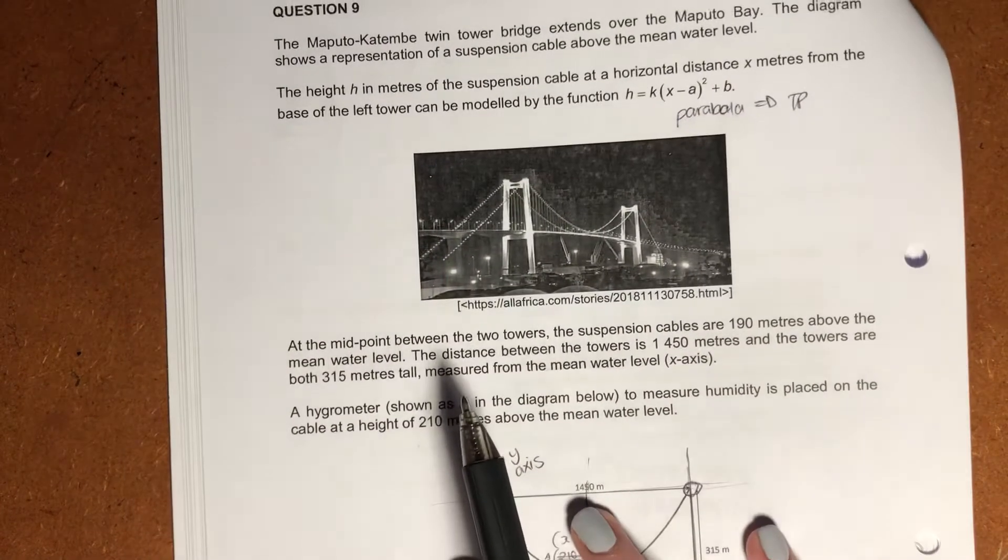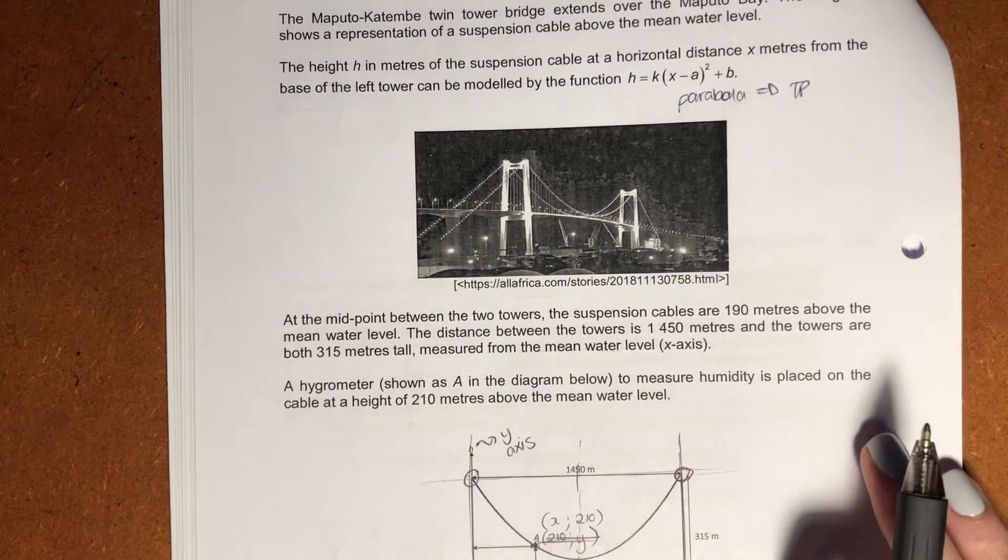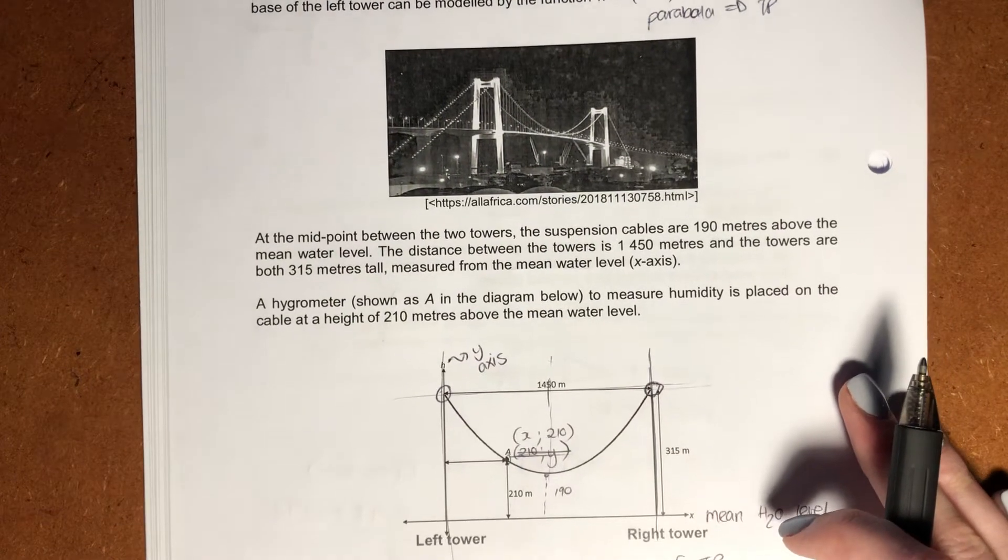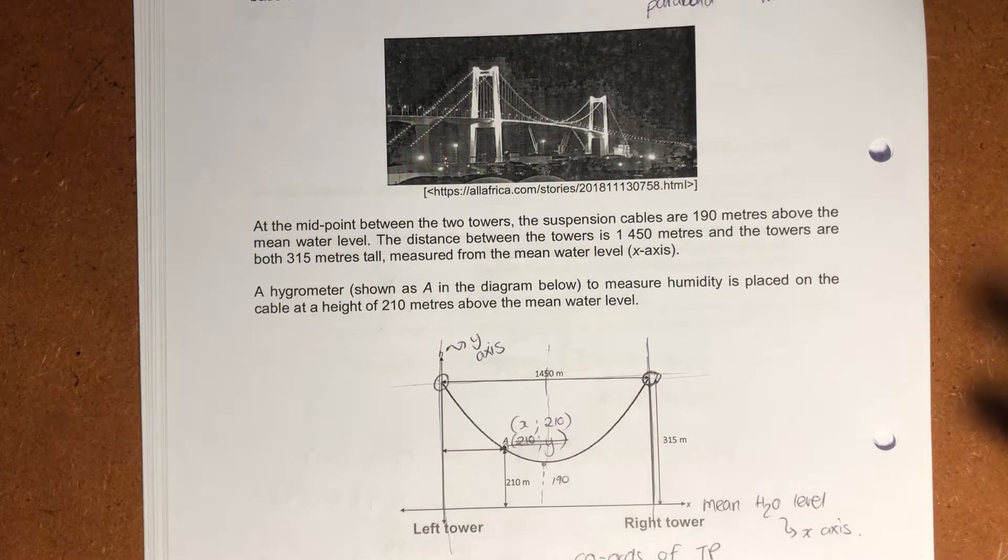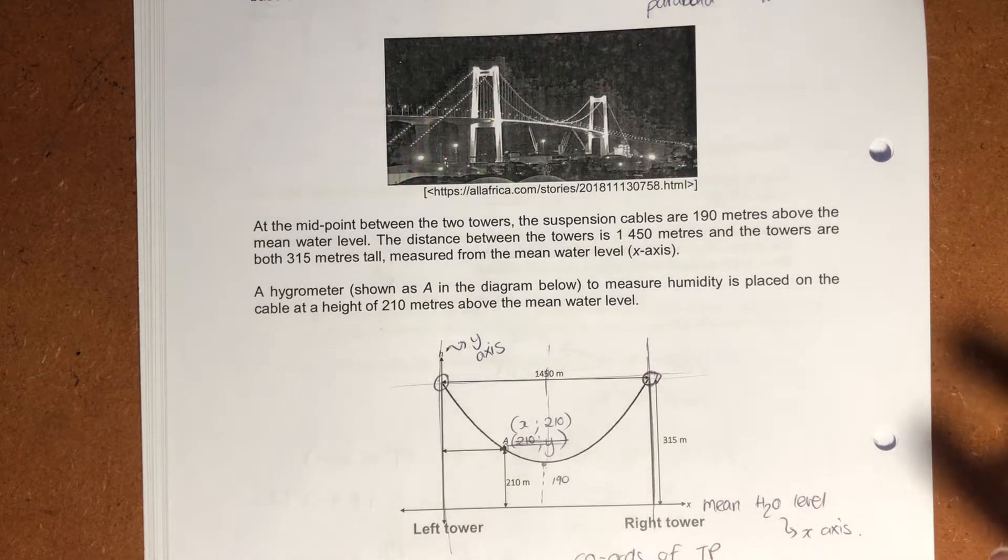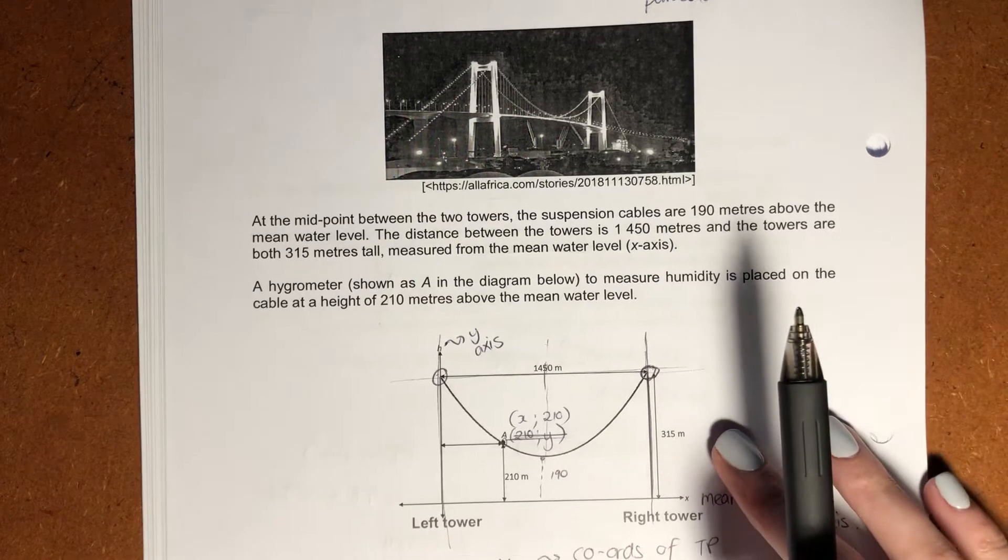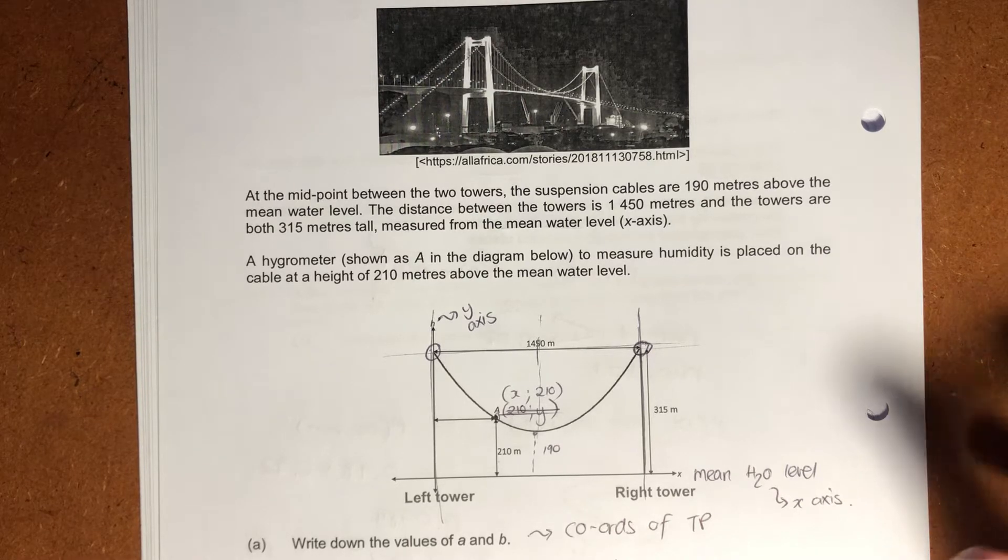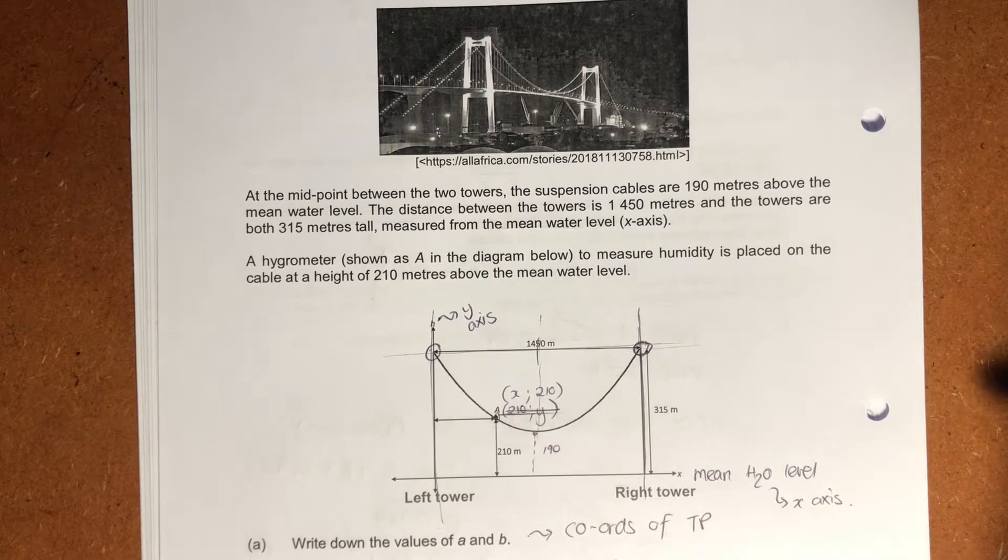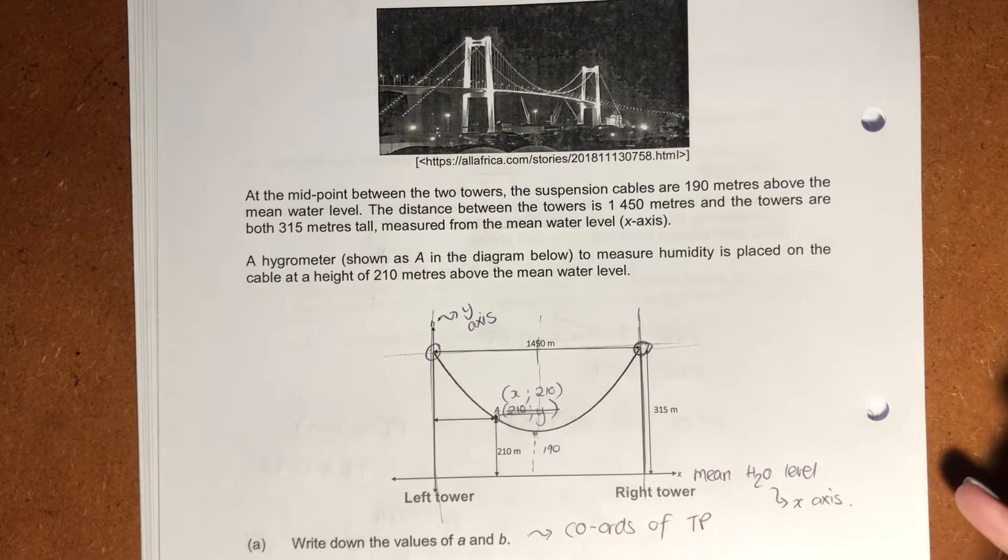So then here it says at the midpoint between the two towers, and we know the midpoint between the two towers is actually just going to be the turning point, the suspension cables are 190 meters above the mean water level. That's our x value. The distance between the towers is 1,450 meters, and the towers are both 315 meters tall, measured from the mean water level. A hygrometer shown as A in the diagram below to measure the humidity is placed on the cable at a height of 210 meters above the mean water level.